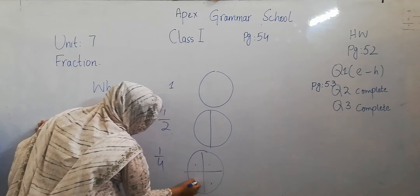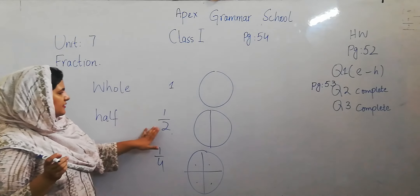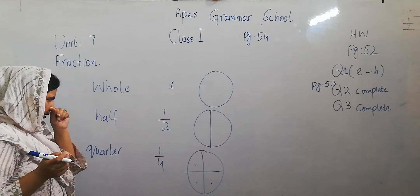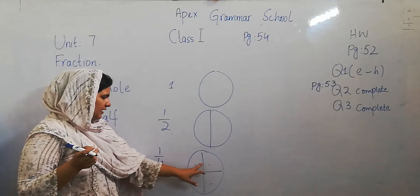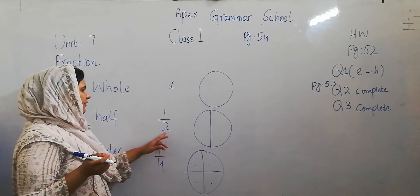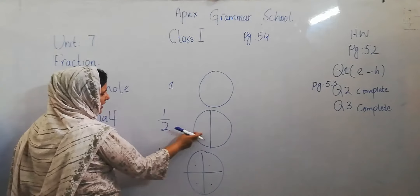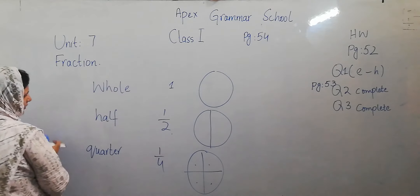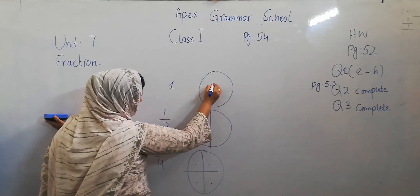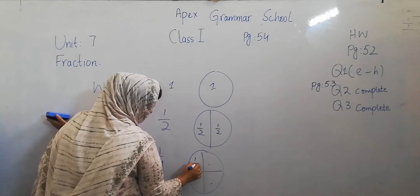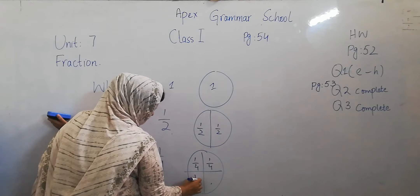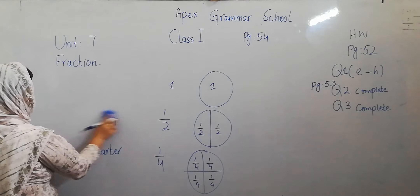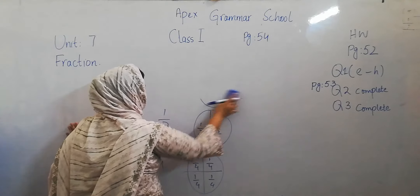This is the denominator and this is the numerator. In the denominator you write the number of equal parts the whole shape is divided into. The numerator shows how many parts you are taking. This is whole, this is half, and this is quarter.